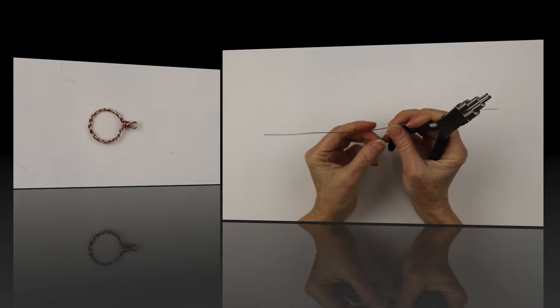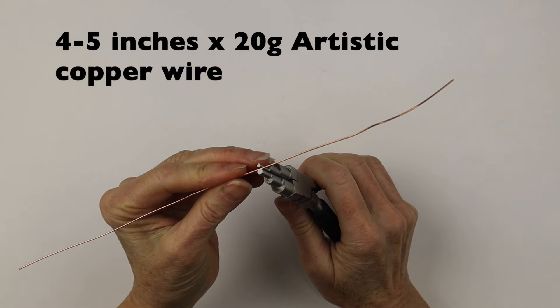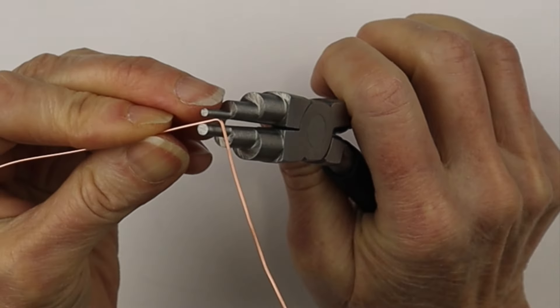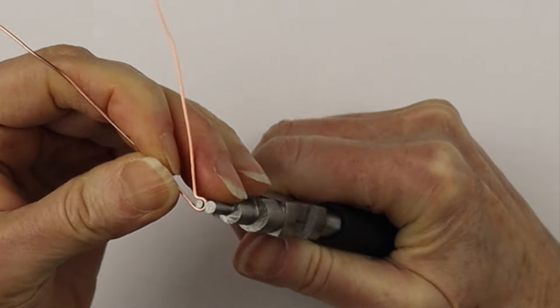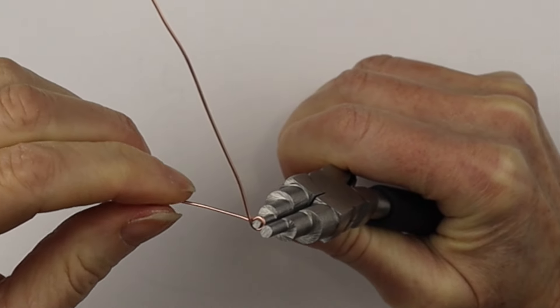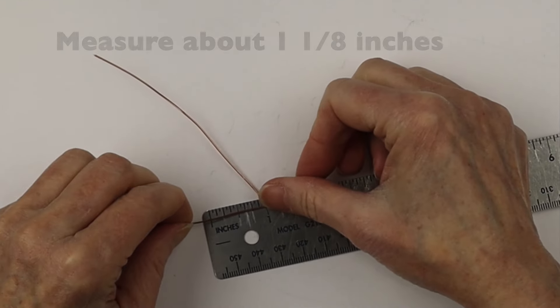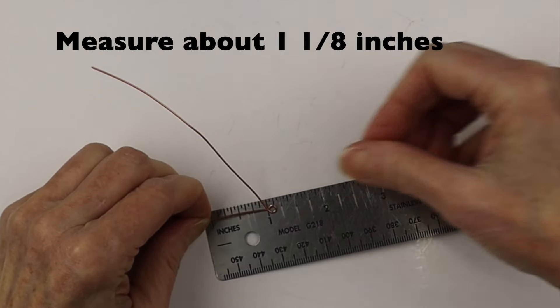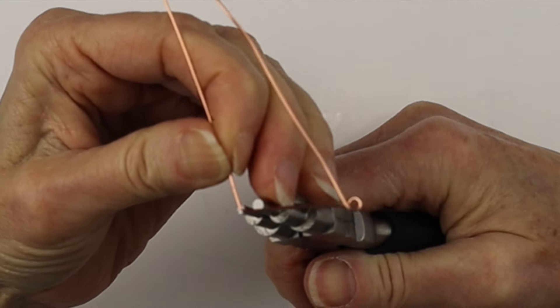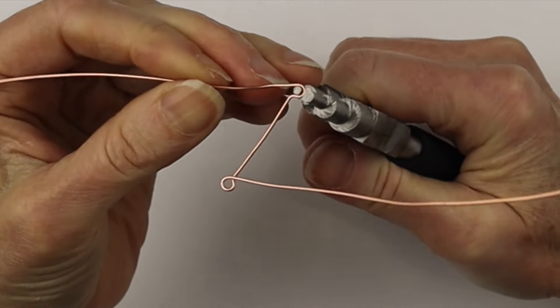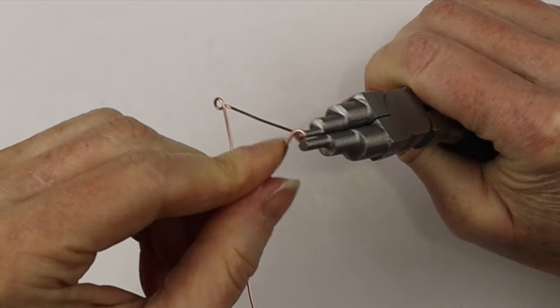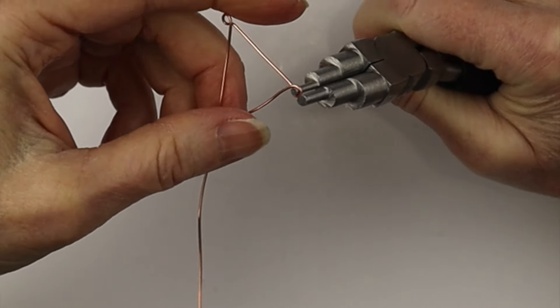There we have our loop. For the stick we'll get about four to five inches of 20 gauge artistic wire and we are going to make a loop on one end, so a centered loop on one side. And we're going to measure about one and an eighth inches and then we're going to bend it up and around so we're making a stick with a loop on either end and those loops are centered. So that's our beginning stage.